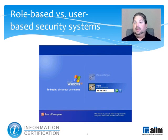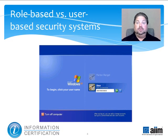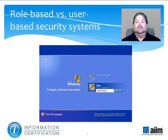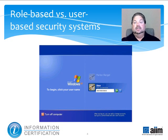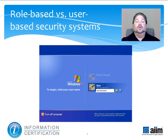Role-based security provided by LDAP and NDS directories, and ACLs, have several advantages over user-based security systems, which are those built on usernames and passwords. Their primary advantage is the ease of implementation and management, because the number of roles will almost always be smaller than the number of users. And if everyone in a role needs to be changed, it can be done once to the role permissions in the ACL, rather than being changed separately for each user.